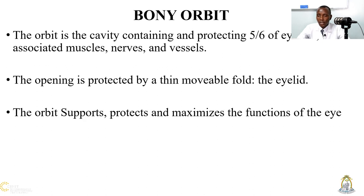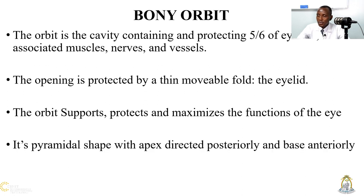The orbit supports, protects, and maximizes the function of the eye, as we stated above. It is considered to have a quadrilateral pyramidal shape, with the base at the opening of the orbit, and narrowing posterior medially to the apex.